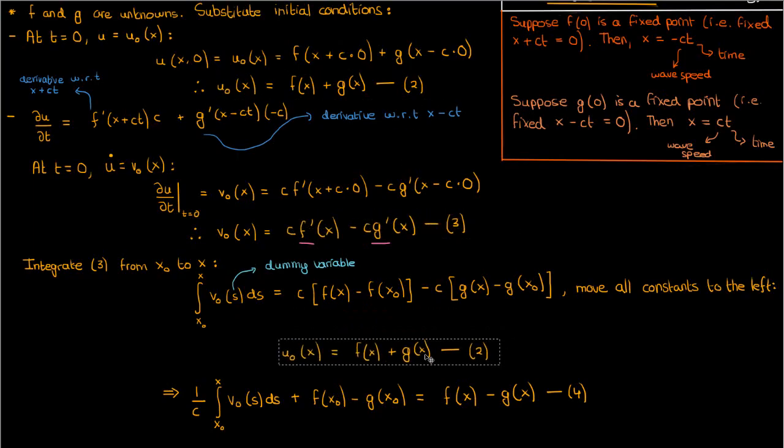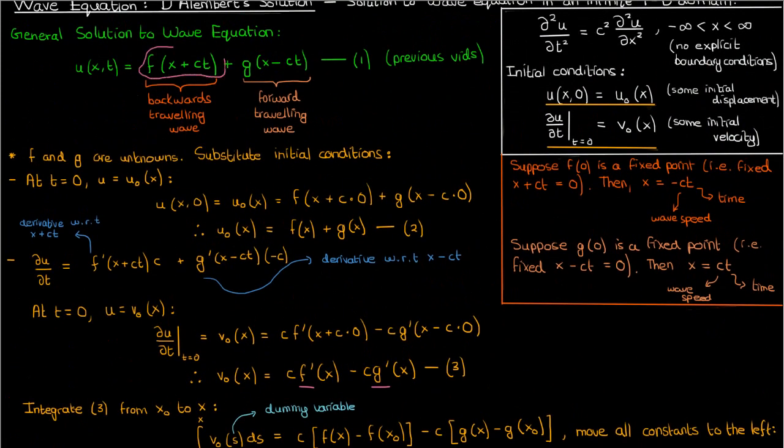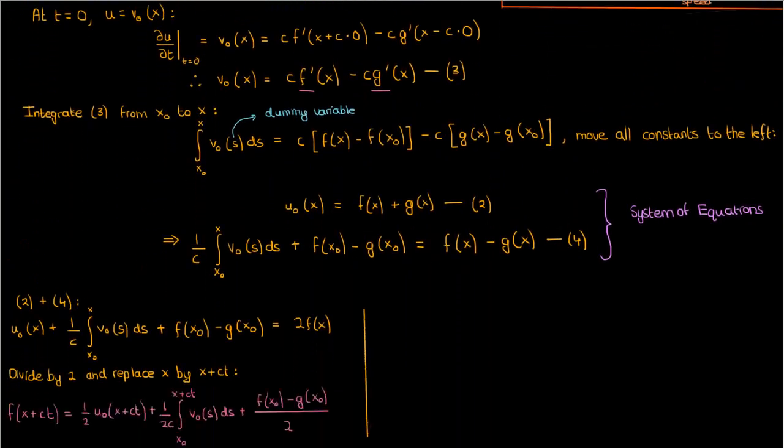First, I'm going to copy-paste equation 2 right above equation 4 just for my quick reference. Anyway, let's start by adding equations 2 and 4. When we do that, we'll get u0 of x plus 1 over c times the integral from x0 to x of v0 of s ds plus f of x0 minus g of x0 on the left and 2 times f of x on the right. We can divide by 2 and replace x by x plus ct to get an expression for our backwards traveling wave f of x plus ct.